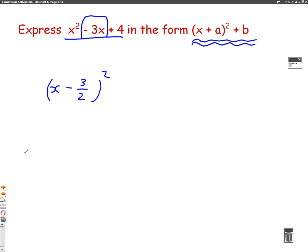So when you expand the bracket there, when you expand that double bracket, you'll get the x squared and you'll get the minus 3x. But you'll get something different to this 4 at the end. So let's take this part.